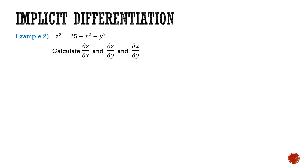Let's do another example. Z squared is equal to 25 minus x squared minus y squared. I want to calculate the partial derivatives ∂z/∂x, ∂z/∂y, and ∂x/∂y. And I'm going to try to do this with implicit differentiation.